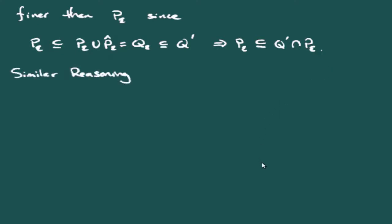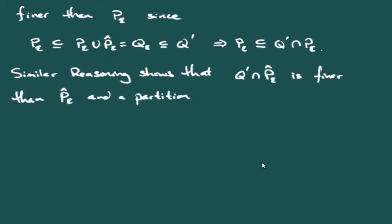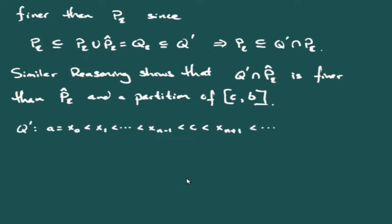By similar reasoning, Q′ ∩ [C, B] is a partition of [C, B] finer than P̂_ε. If we write out Q′ as A = x₀ < x₁ < … < x_{n-1} < x_n = C < x_{n+1} < … < x_{n+m} = B, we can split the Riemann-Stieltjes sum over Q′ into a sum over [A, C] and a sum over [C, B].